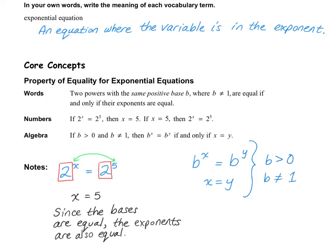Because what happens if b equals 1? If we had 1 to the power of x equals 1 to the power of 7, well, since 1 times 1 times 1 — it doesn't matter how many times you multiply 1 by itself — x could be 7, or 8, or 10, or even a negative number like negative 5. So that's why b cannot be 1.